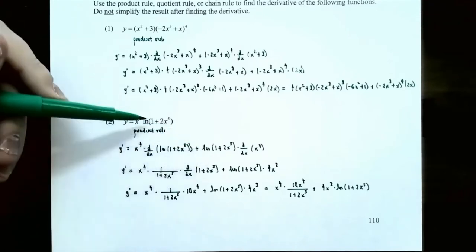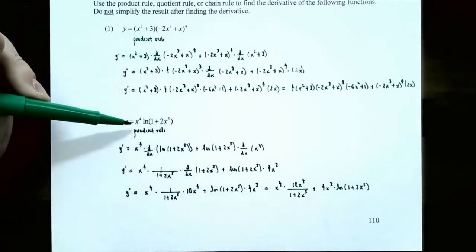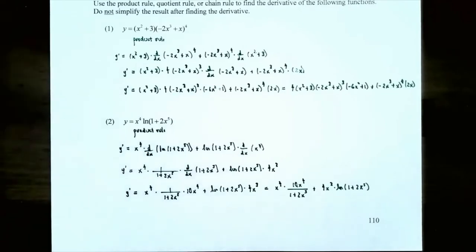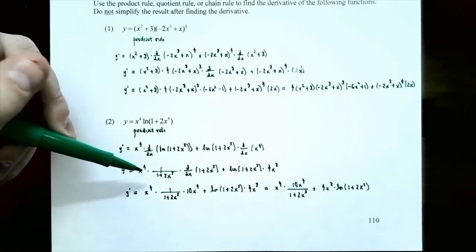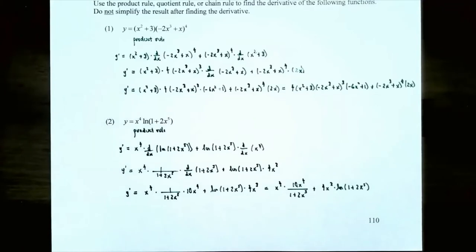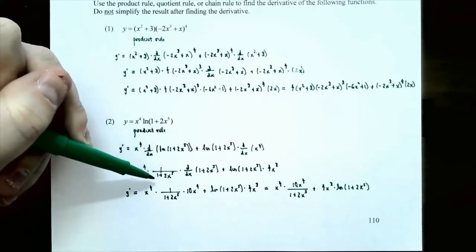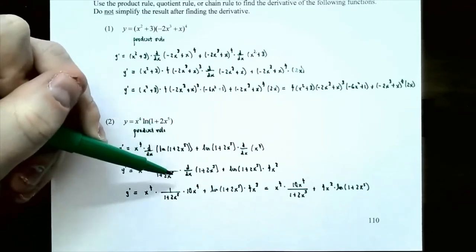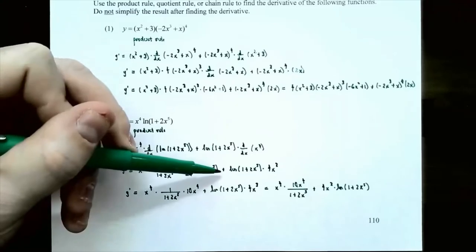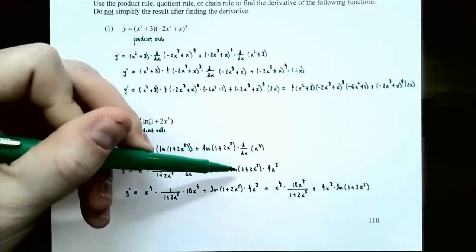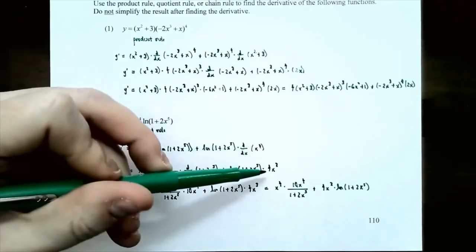Plus — because of the product rule — the second function stays the same, natural log of 1 plus 2x to the fifth, times the derivative of the first function, d/dx of x to the fourth. Now find the derivatives. y prime is x to the fourth unchanged. The second function is a composite function — it's natural log of a function, not just natural log of x. The rule is 1 divided by the argument of the logarithm, so 1 divided by 1 plus 2x to the fifth, times the derivative of the inside function, d/dx of 1 plus 2x to the fifth. The derivative of x to the fourth is 4x cubed.